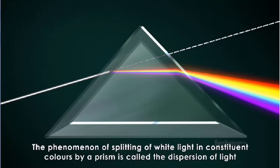This phenomenon of splitting of white light into constituent colors by a prism is called the dispersion of light.